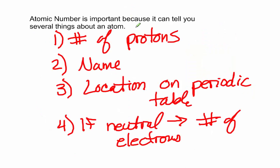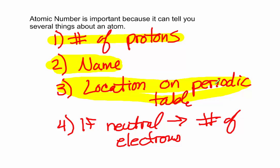In summary, the atomic number is important because it tells you several things about the atom. First, the definition: it tells you the number of protons — that's what the atomic number is. Secondly, it tells you the name of the atom. If we change the number of protons, we change the name of the atom. The number of neutrons and the number of electrons has nothing to do with the name of the atom — the only thing that tells you the name of the atom is the number of protons. Third, it tells us the location on the periodic table. The periodic table is laid out by atomic number starting on the top left and increasing as you go to the right and down.